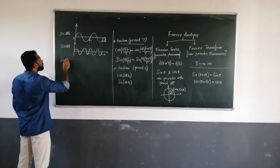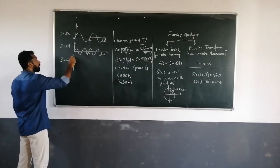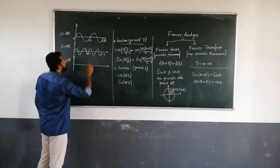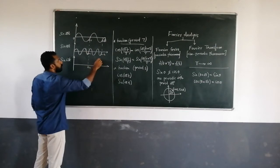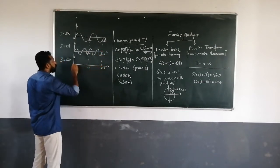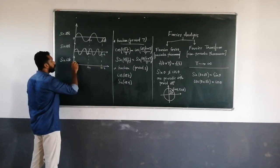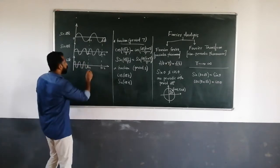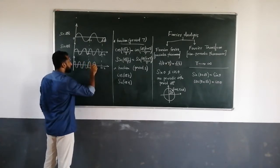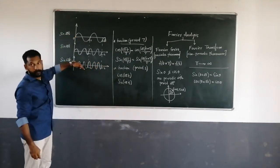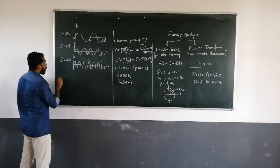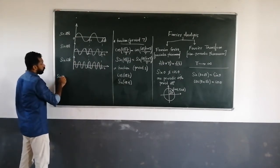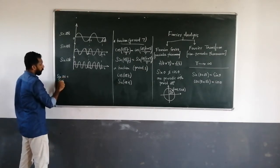Now consider sin(6πt). For t = 1, there will be 3 cycles. After t = 2, there will be 6 cycles. So here the frequency is tripled. Now we combine all three: sin(2πt) + sin(4πt) + sin(6πt).